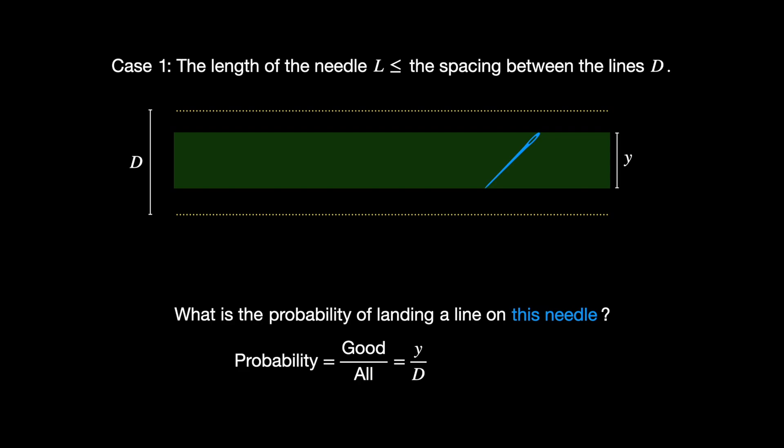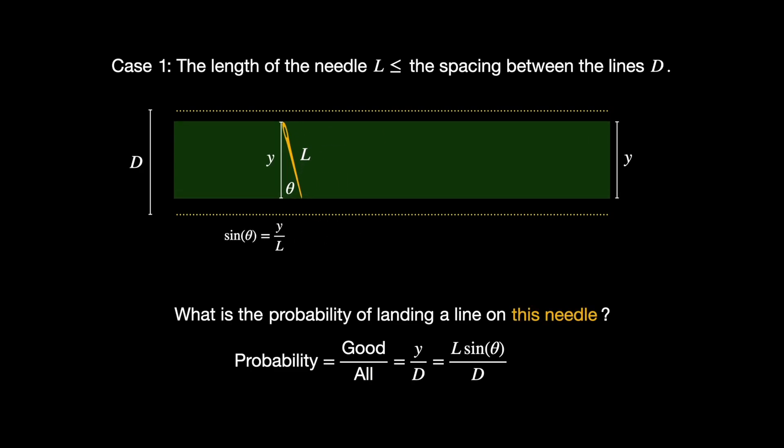We realize that Y is affected by the angle of rotation of the needle relative to the horizontal. The length of the needle L is fixed, theta depends on how the needle fell, and the height Y of the green zone is affected by that angle. From geometry, we know that sine of theta is Y over L, which means we can solve for Y in terms of the fixed number L and the angle theta. In particular, Y is L sine theta. Therefore, the probability of landing a line on this needle is the length of the needle L times sine of the angle theta divided by the domain's width D. For this needle, the probability is still L sine of theta divided by D, but the angle theta is different.